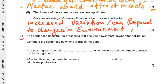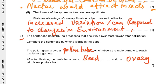Part B of the question: complete the sentence describing the processes that occur in a sycamore flower after pollination. The pollen grows a pollen tube, which allows the male gamete to reach the female gamete. After fertilization, the ovule becomes a seed and the ovary will develop into a fruit.